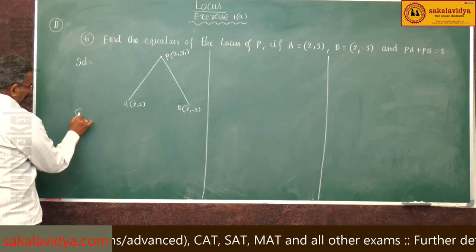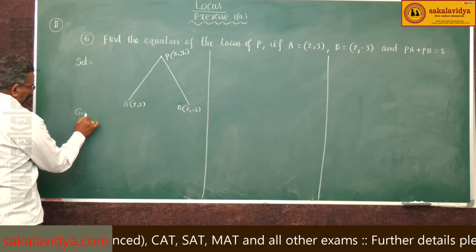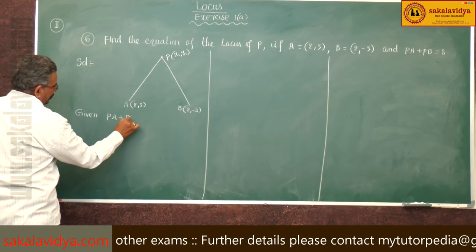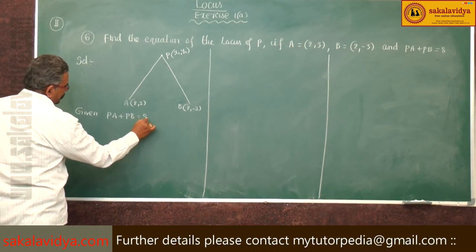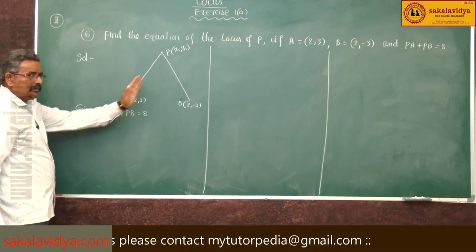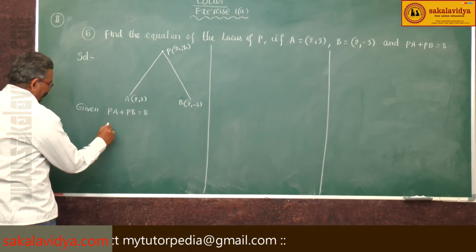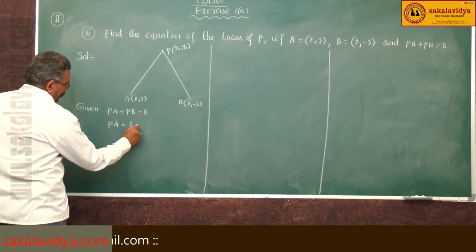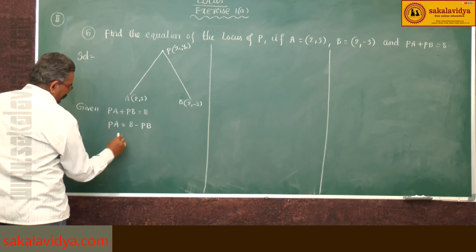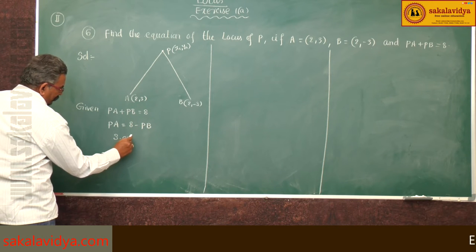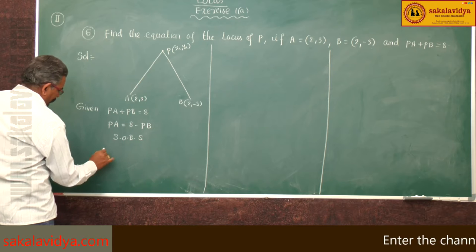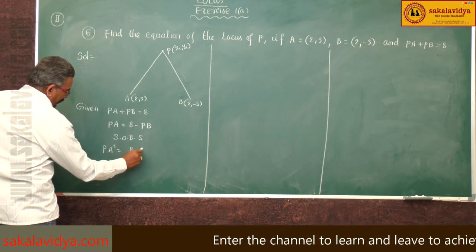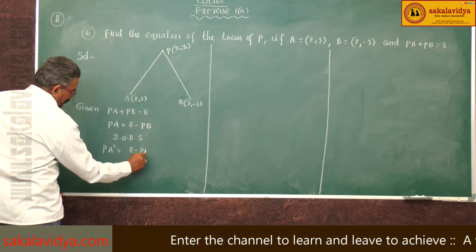Given condition PA plus PB equals 8. Take away PB to the other side: PA equals 8 minus PB. Squaring on both sides: PA² equals (8 minus PB)².